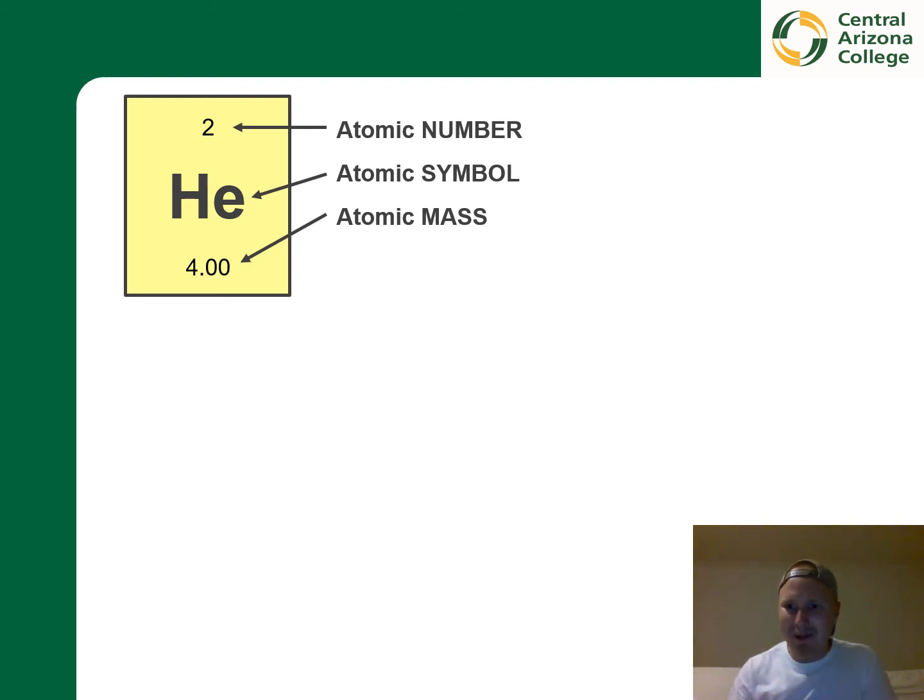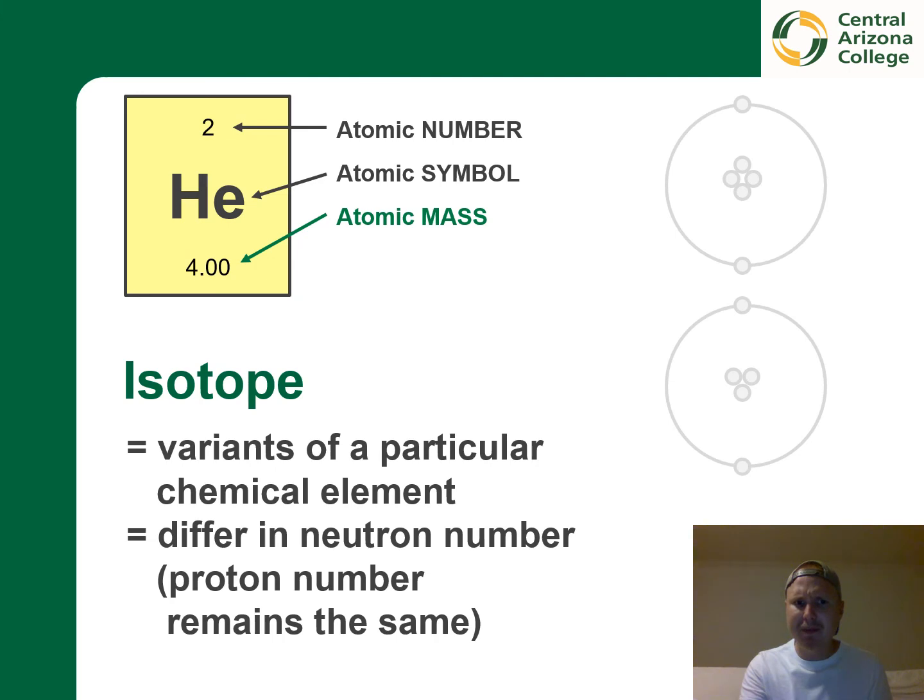And there is going to be another concept that I want to discuss with you. Although the atomic number, which was the number of protons, always remains the same, the mass can vary. Remember, the mass was determined from the protons and neutrons. Isotopes are variants of a particular chemical element. They differ in neutron number. However, all isotopes of a given element have the same number of protons. And I have included here on the right two examples of natural helium isotopes, since we were looking at helium in the first place.